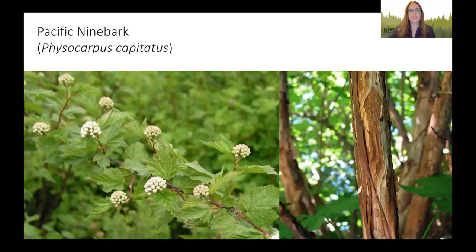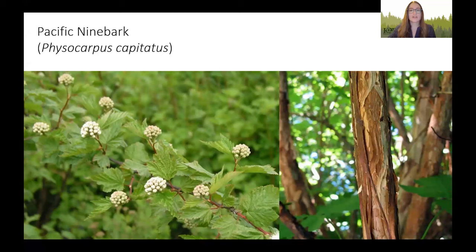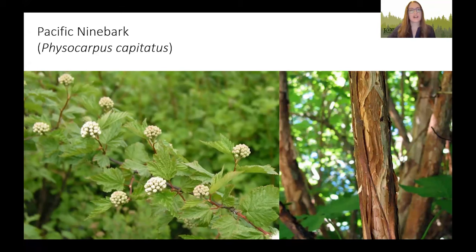Next, Pacific ninebark, which can survive in wet or moist areas but does not like to dry out totally. This plant has beautiful white and pink blooms that become pink seed pods, adding beauty to your garden and providing a valuable resource for wildlife for extended periods of time. The plant is called ninebark because of its unique peeling bark that people believed grew in nine layers.